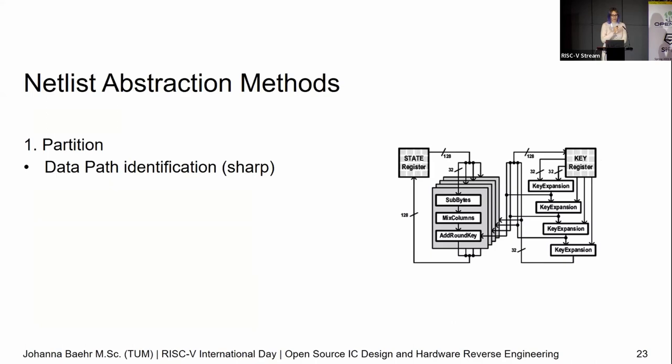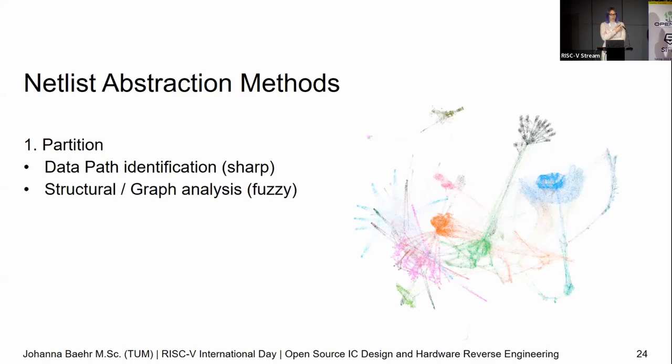When we partition using the data path, we go from the inputs through and say: data is flowing from here to here to here. We cut out pieces and say: 32 bits going in here, 32 bits coming out here — between that, something is being done, it belongs together, maybe it's a multiplier. I call this sharp — it's very exact, we can cut out very exact portions and work with them. It's very much a divide-and-conquer approach: keep dividing and conquering until we've understood what that little part does, then put it back together.